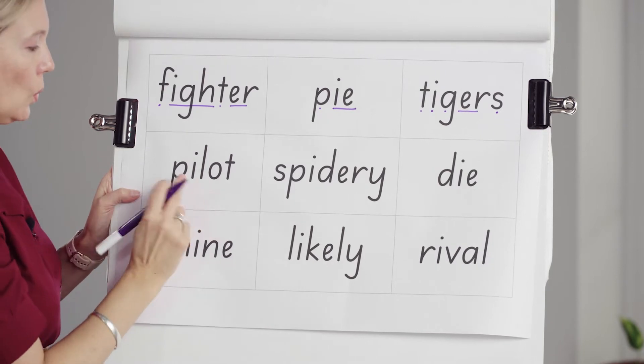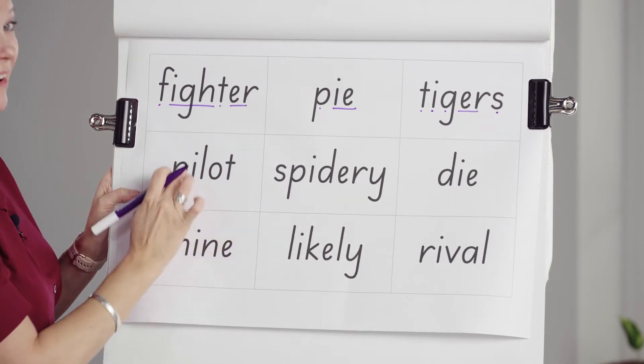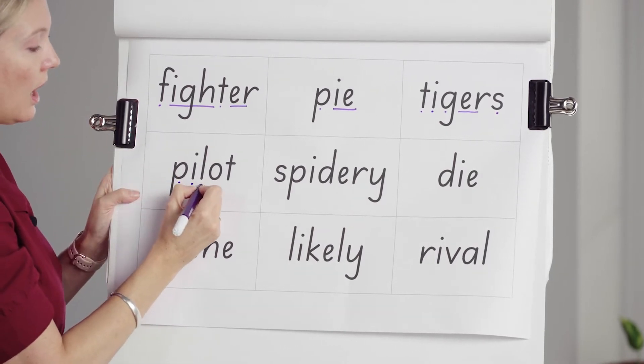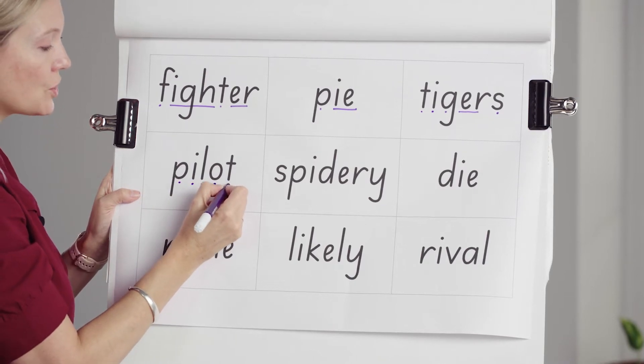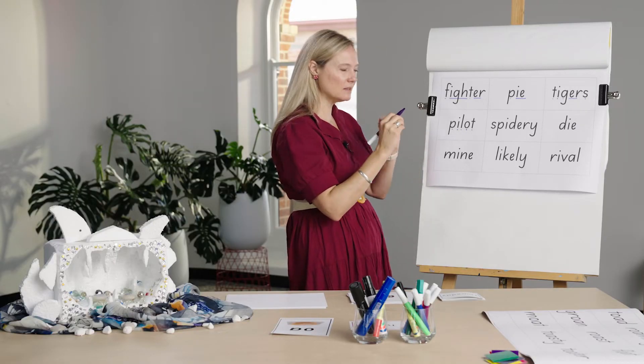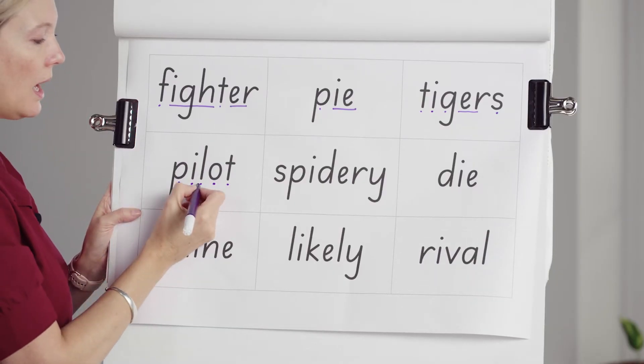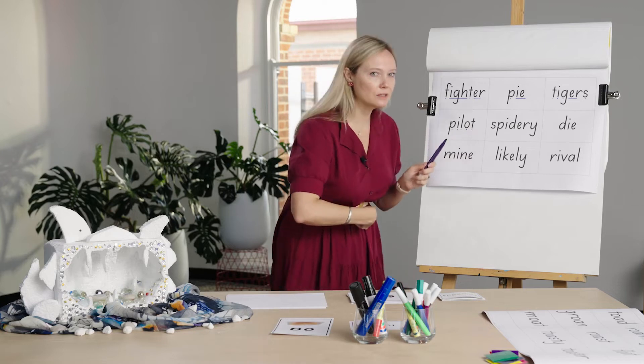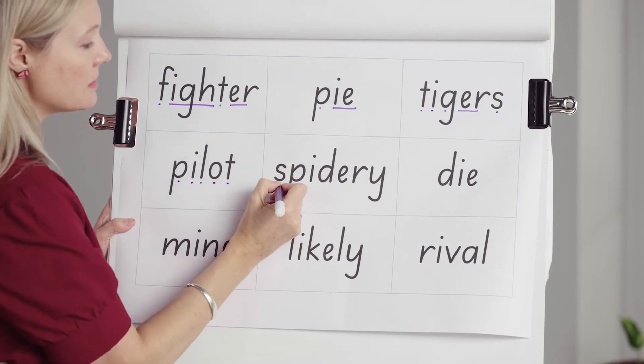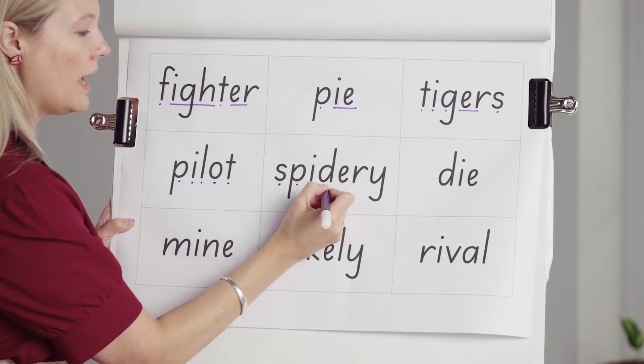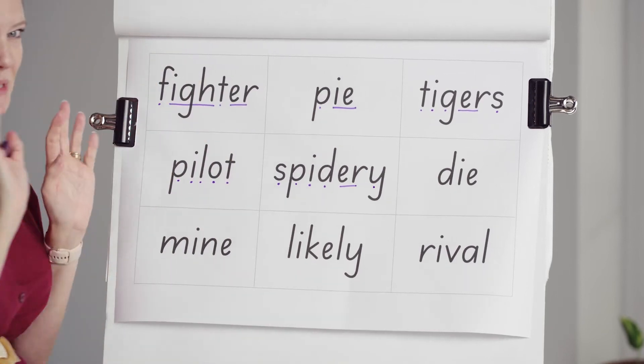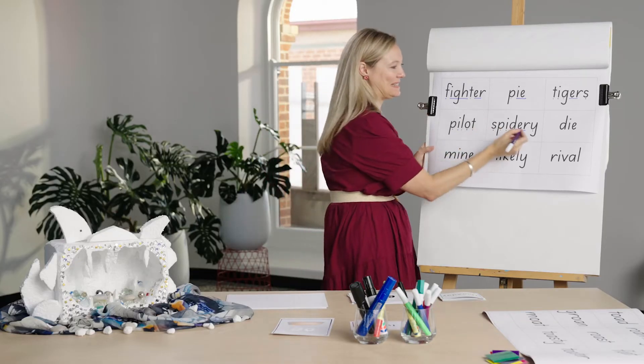Next line. Two syllables. Two vowels. Let's try this as the open syllable i. P-i-l-o-t. Pilot. Do you remember when we flex those sounds, those vowel sounds, to see what makes sense? Pilot. That o makes the schwa sound. S-p-i-d-e-r-y. Spidery. That's a scary word. D-i-e. Die.